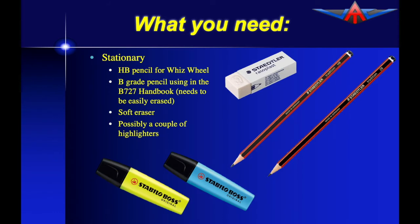You'll also need some stationery. I suggest an HB pencil for when you're using the Whizwheel — anything harder won't erase, anything softer is probably not accurate enough. I also suggest a B-grade pencil, 2B or 1B, which will allow you to circle information as you're extracting data out of the Boeing 727 manual, and it's more easily erased than the HB. You'll need a soft eraser so you can erase what you've circled. A couple of highlighters might also be useful.